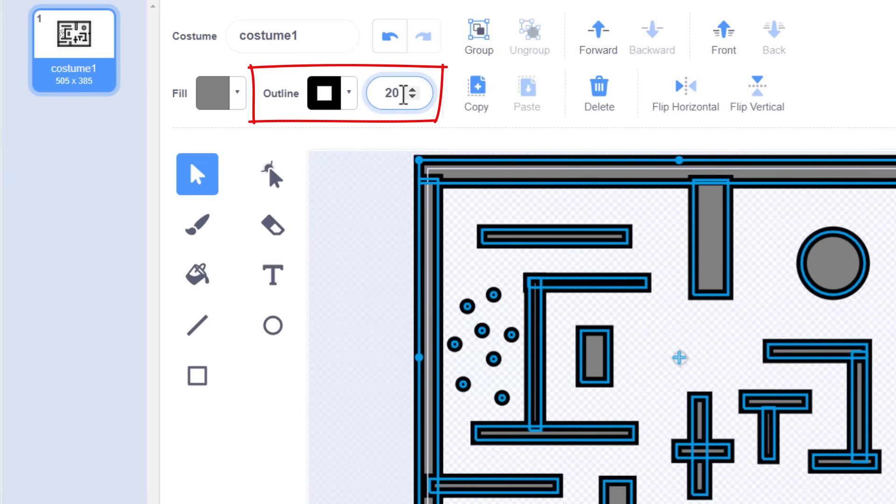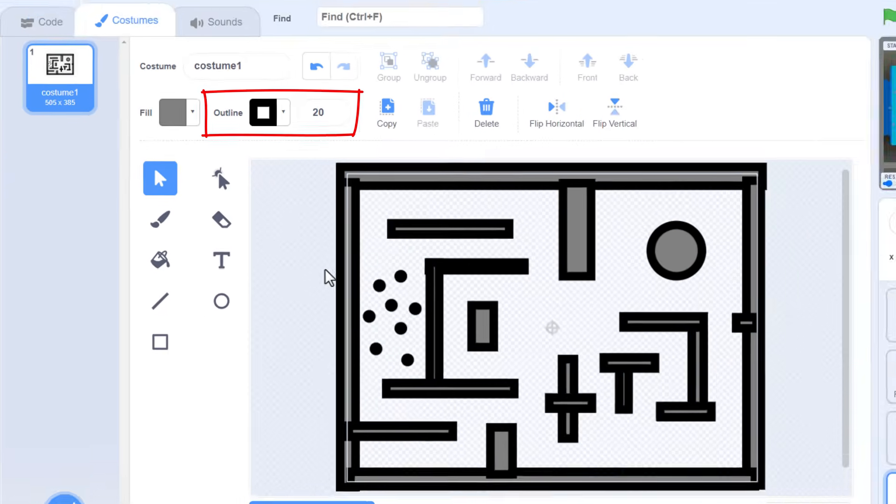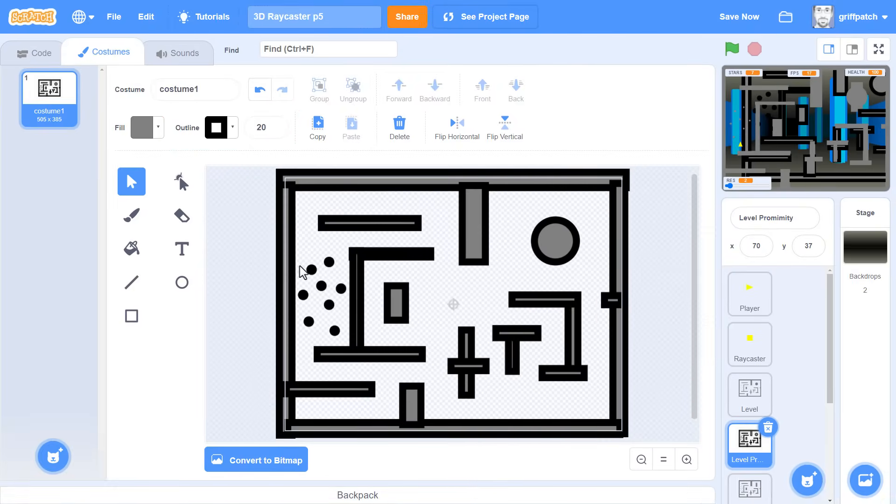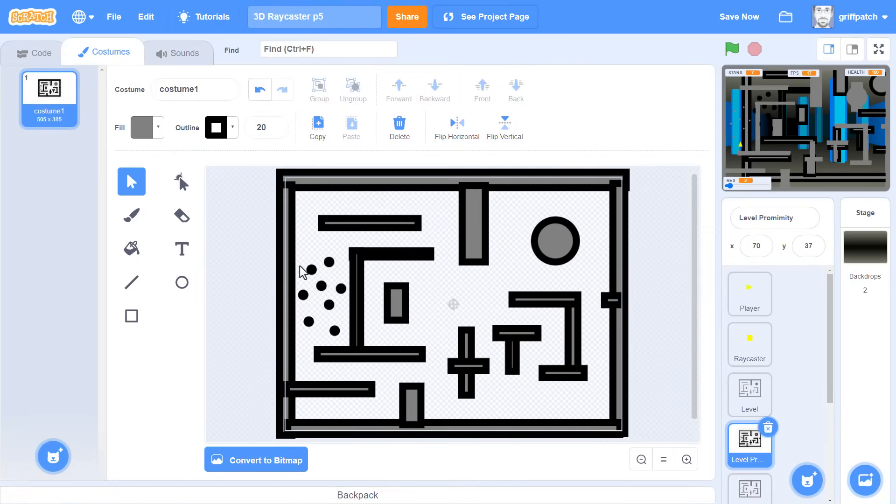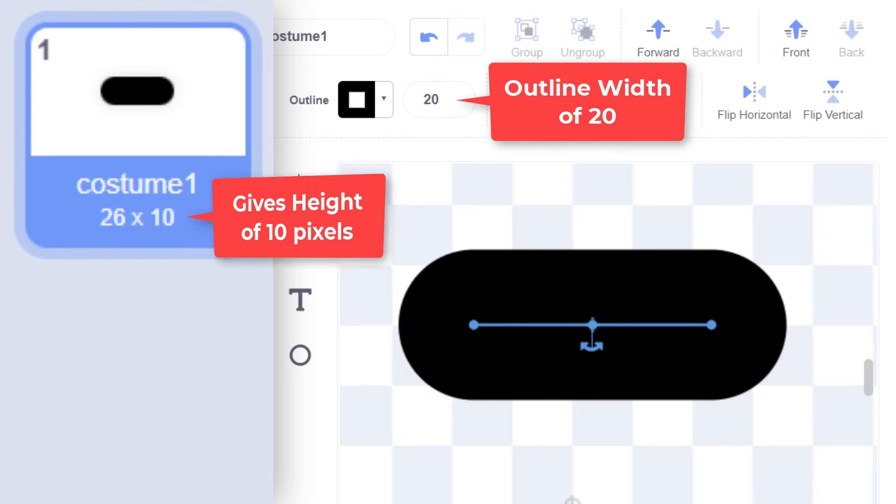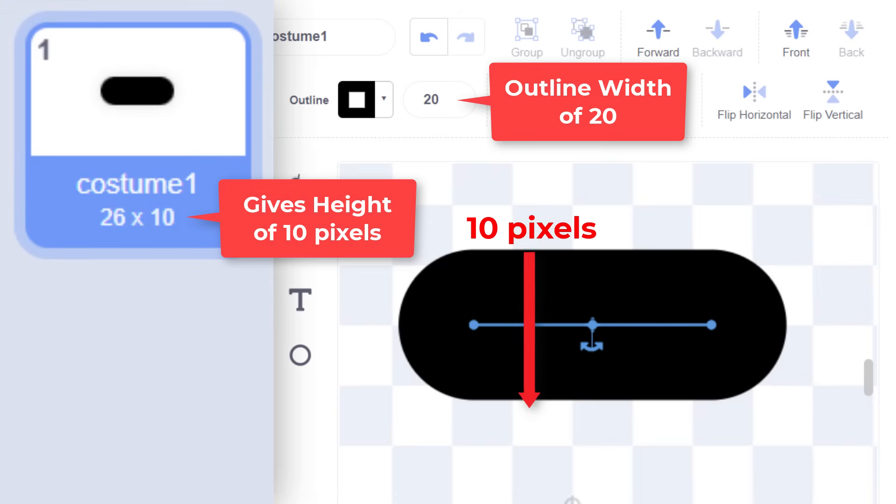Now, we can simply set the outline width to 20. So, just how wide a perimeter has this added to each shape? Well, pen outlines are measured in half pixels, so it will be 10 pixels wide.